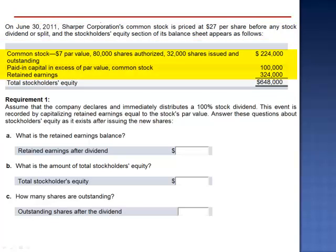Common stock, $7 par, 80,000 shares authorized, 32,000 shares issued and outstanding, $224,000. Paid-in capital in excess of par value on common stock, $100,000, and retained earnings, $324,000. Total stockholder's equity is $648,000.